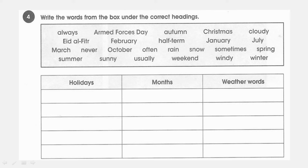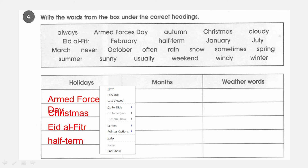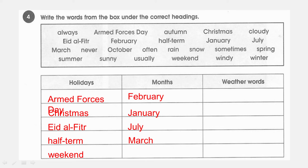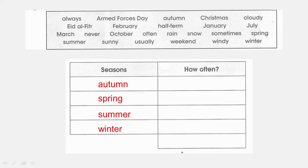Now move to another exercise. You have these words and must place each one under the correct heading: Holidays, Months, Weather, or Seasons. Under Holidays: Armed Forces Day, Christmas, Eid Al-Fitr, half term, weekend. Under Months: February, January, July, March, October. Under Weather words: cloudy, rain, snow, sunny, windy. Under Seasons: autumn, spring, summer, winter. Under How Often: always, never, often, sometimes, usually.